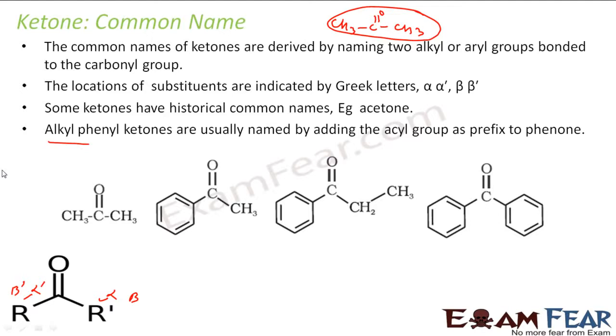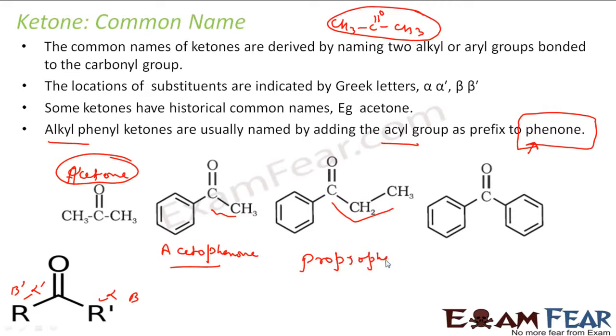Alkyl phenyl ketones are generally named by adding acyl groups as a prefix to phenone. Please note, for alkyl phenyl ketones we use this phenone. So for this, I told the common name is acetone. This is a historical common name. This guy, if you see, this will be acetophenone.